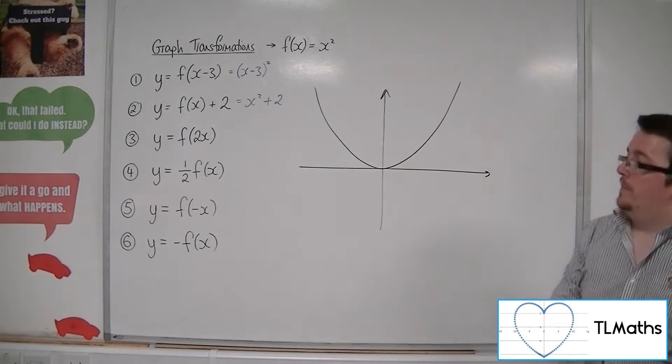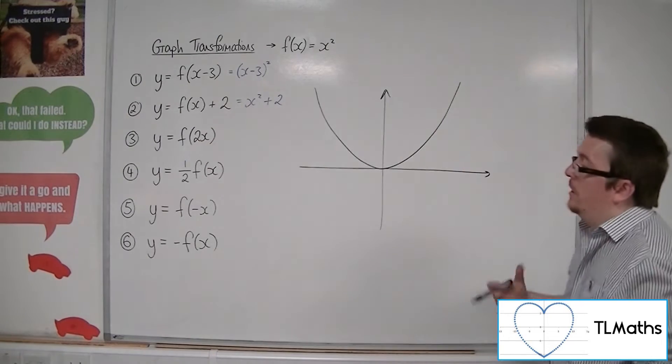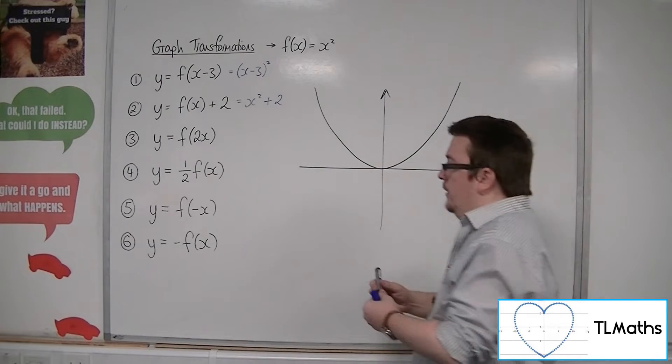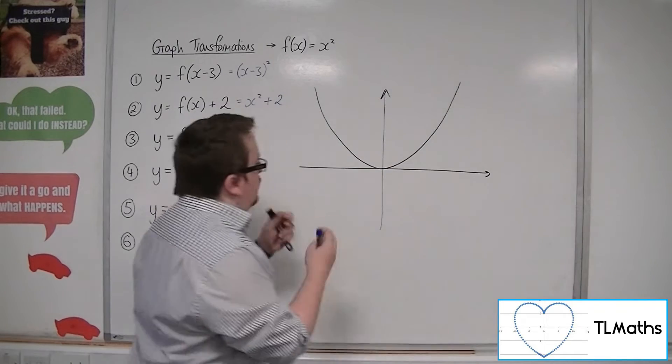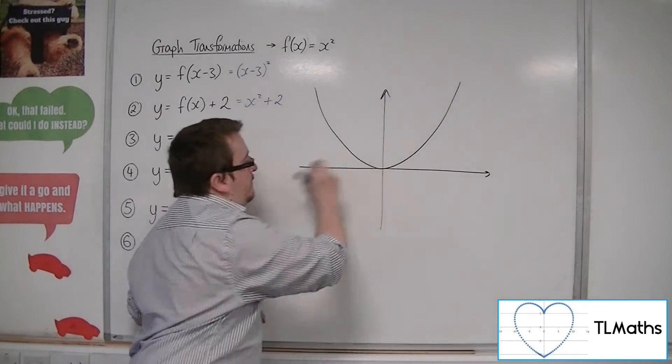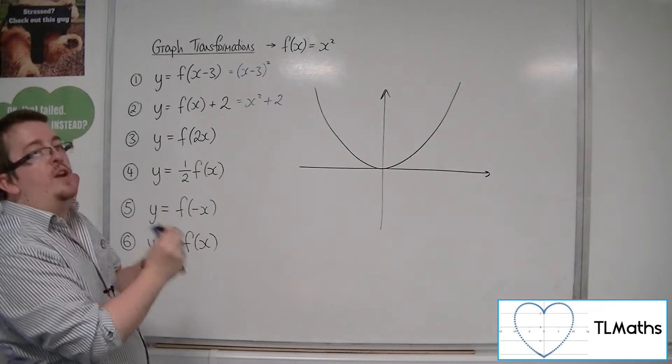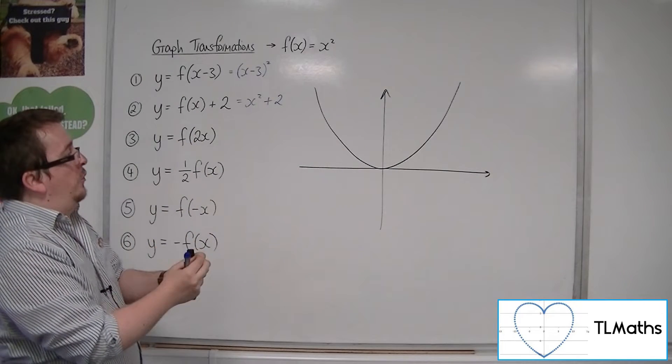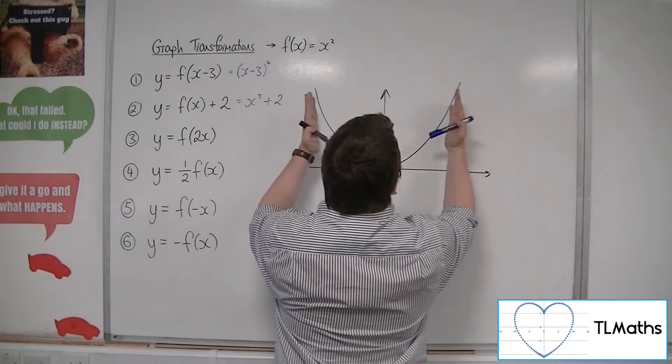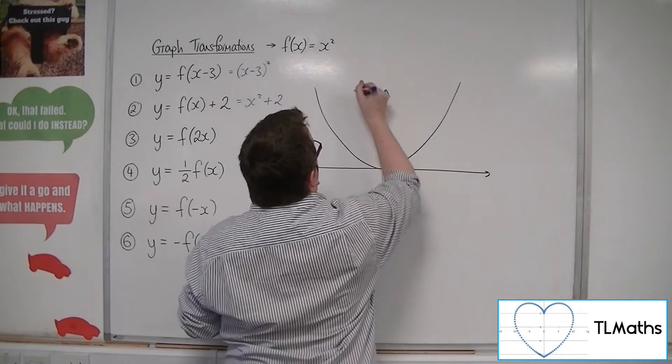Because it's the reciprocal of the number next to the x, of the coefficient of x. So that means if you're thinking about it from the 0, 0 point, then that point won't change because it's on the y-axis. All the other points that aren't on the y-axis will be compressed inwards by a factor of a half.